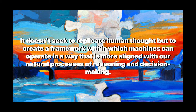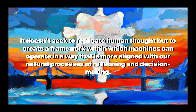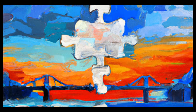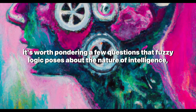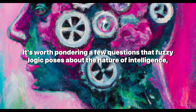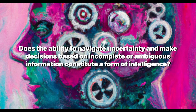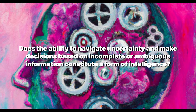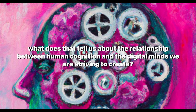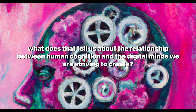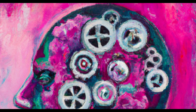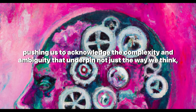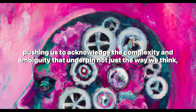Fuzzy logic doesn't seek to replicate human thought, but to create a framework within which machines can operate in a way that is more aligned with our natural processes of reasoning and decision-making. As we draw closer to the end of our exploration, it's worth pondering: does the ability to navigate uncertainty and make decisions based on incomplete or ambiguous information constitute a form of intelligence? And if so, what does that tell us about the relationship between human cognition and the digital minds we are striving to create? Fuzzy logic challenges us to reconsider our definitions of intelligence and rationality, pushing us to acknowledge the complexity and ambiguity that underpin not just the way we think, but the way the world works.